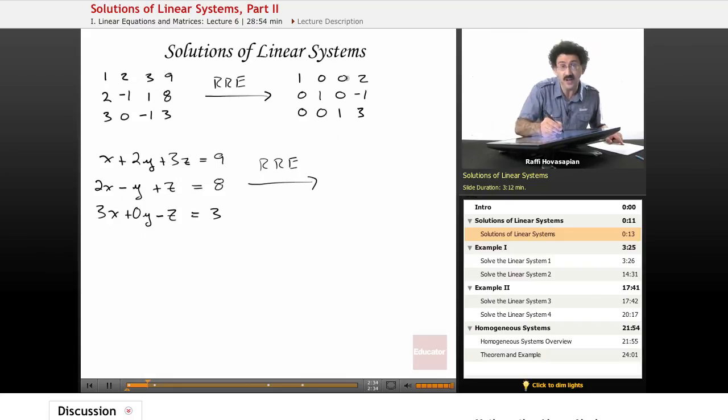This time, I'm going to actually avoid the zeros. We have x equals 2, y equals negative 1, and z equals 3. So this is our solution.